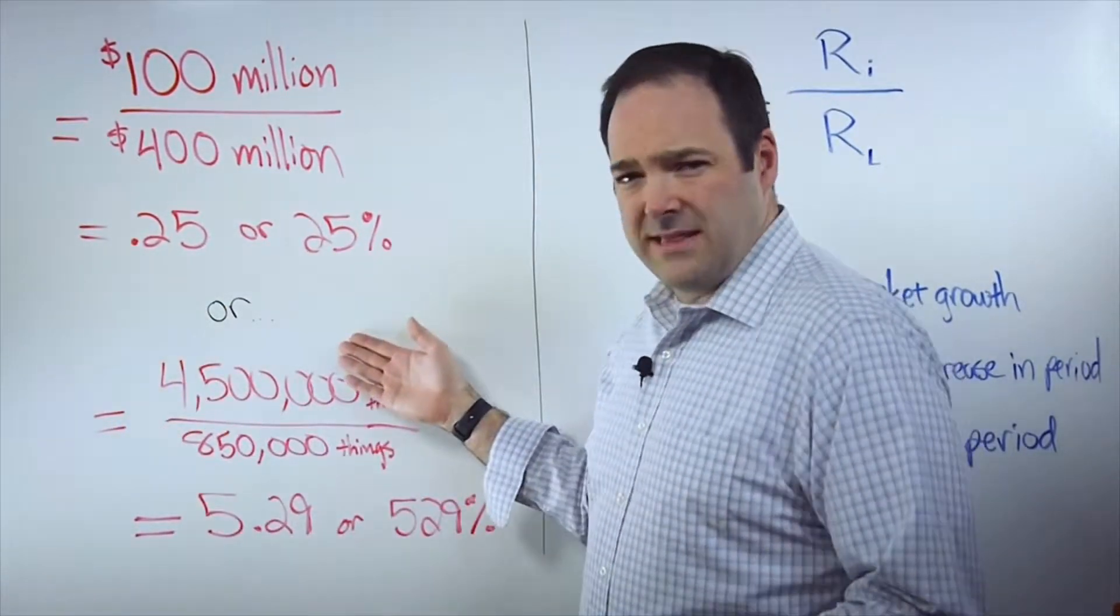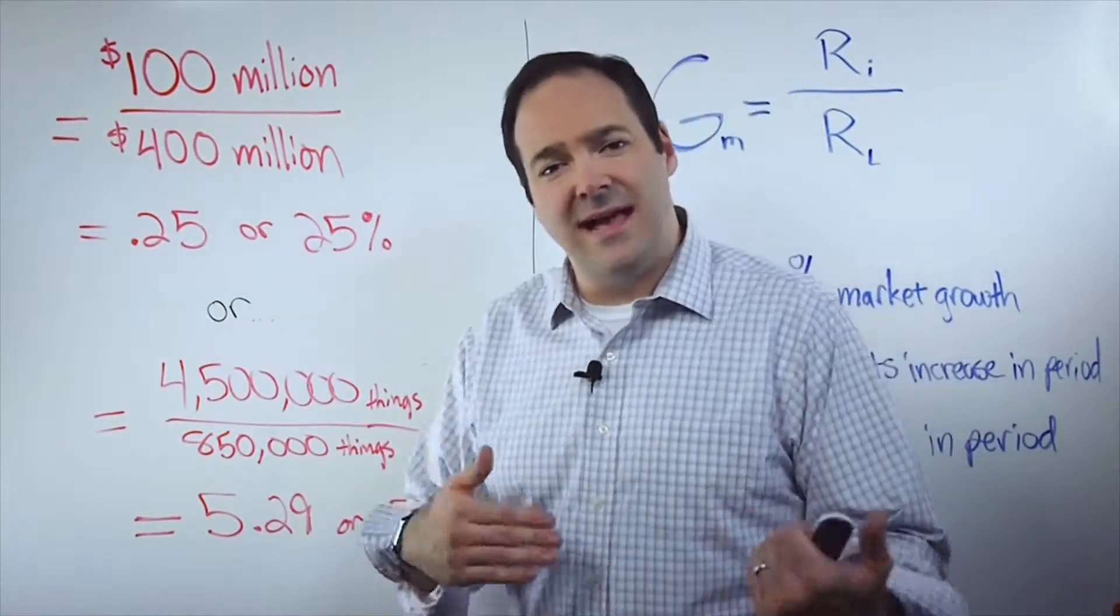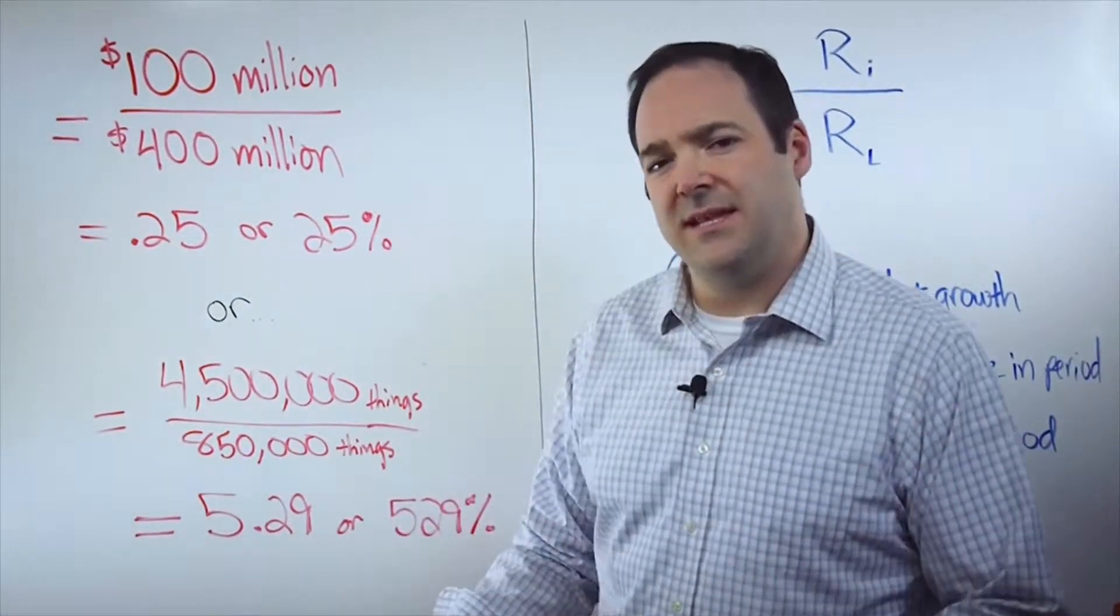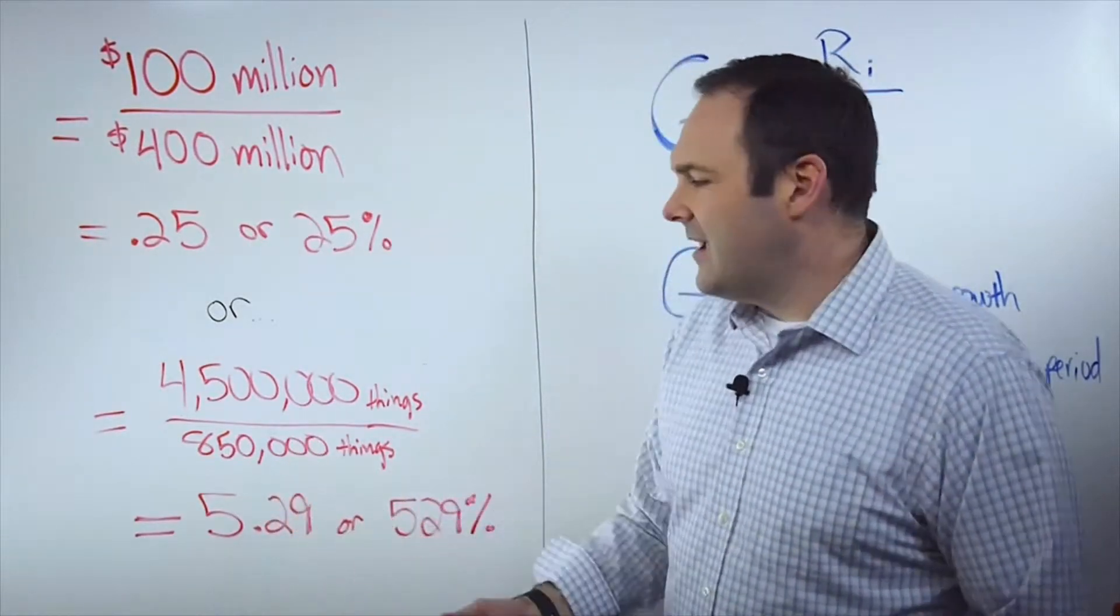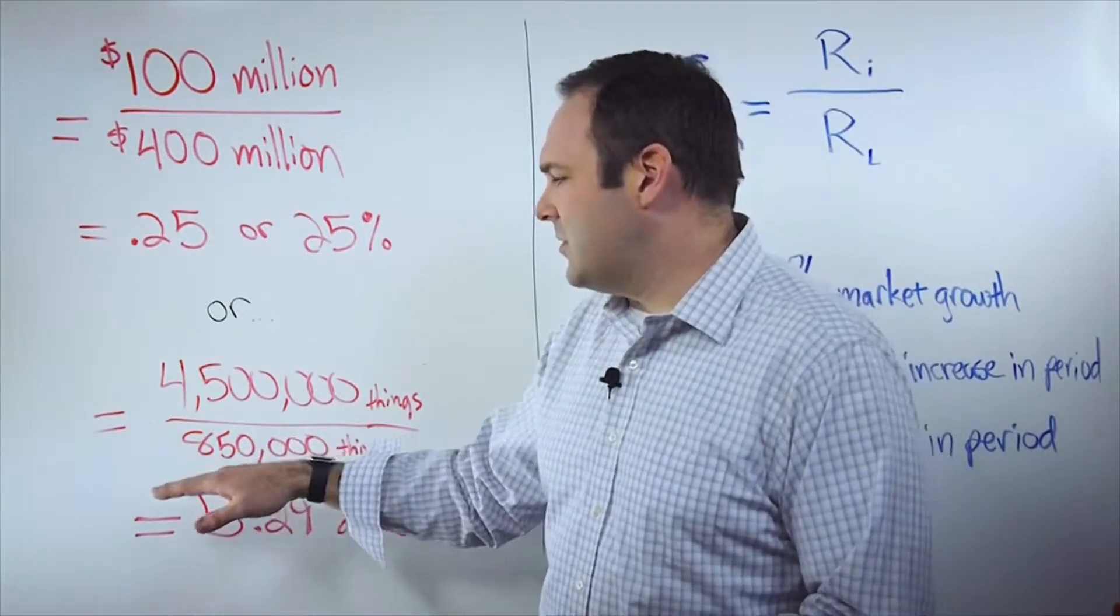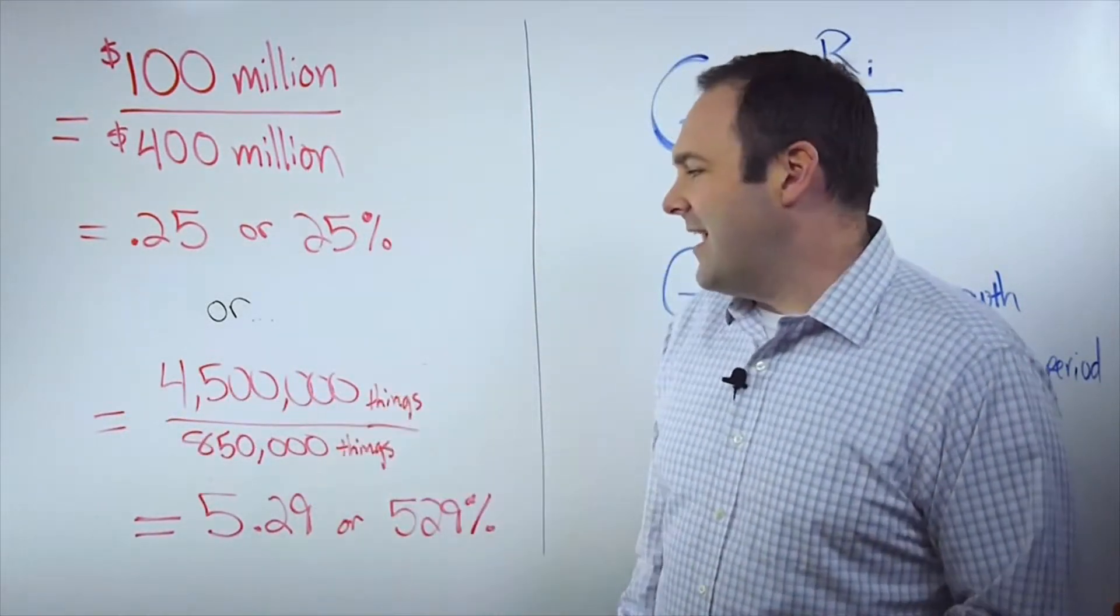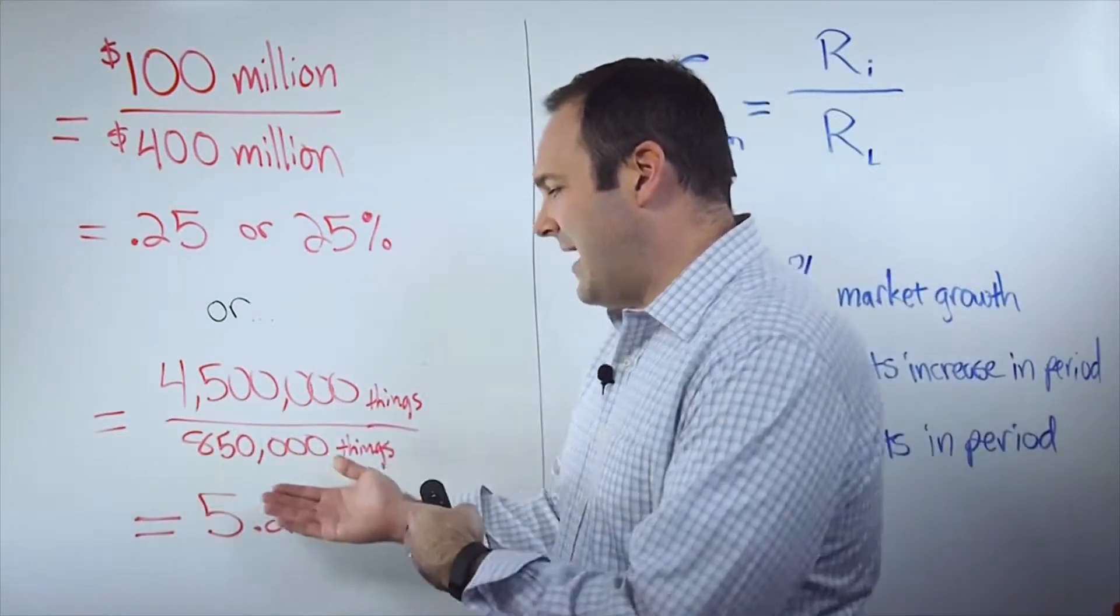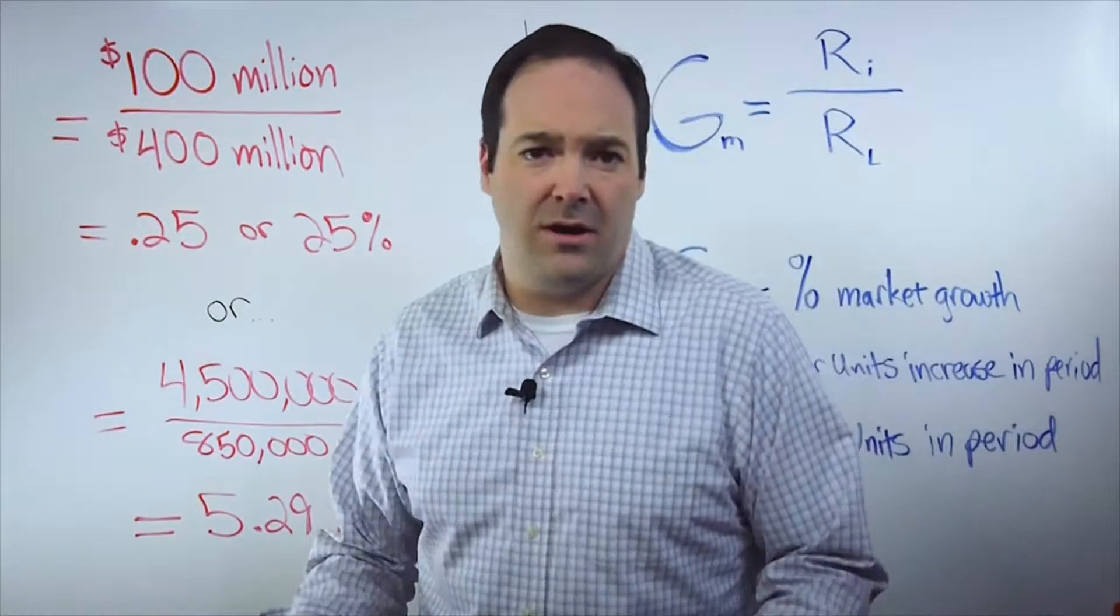So if you look at that in terms of units sold, the same principle applies. Let's say that last year you released a new product towards the end of the year, and you sold 850,000 of those things. And then this year, on top of the 850,000, you sold an additional 4,500,000 things. You do the math on that, and it's 5.29 or 529% market growth.